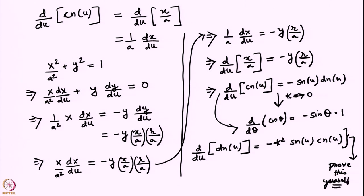So we have defined elliptic functions, found a few identities relating them, and used those identities along with the equation of the ellipse to obtain relations for how to differentiate them. Now let us find out if we can express elliptic functions or inverses of elliptic functions as integrals. This is what we will actually need when we are solving the full nonlinear pendulum.